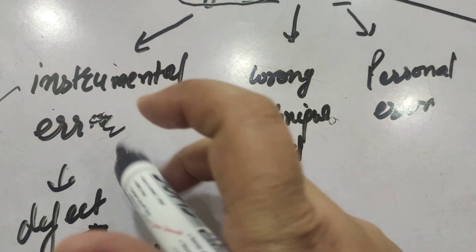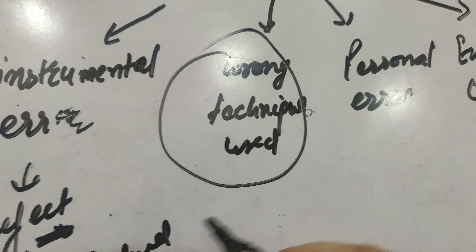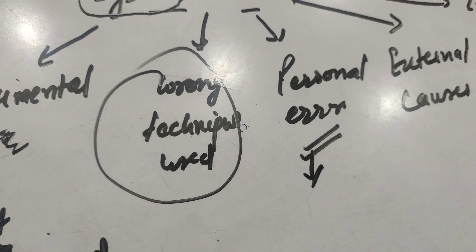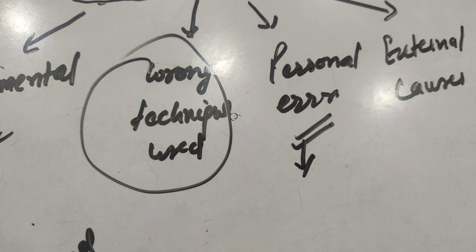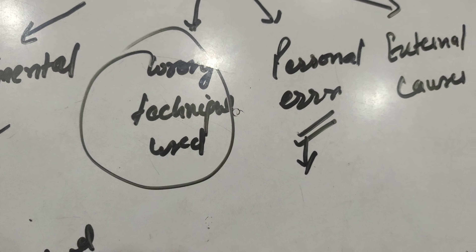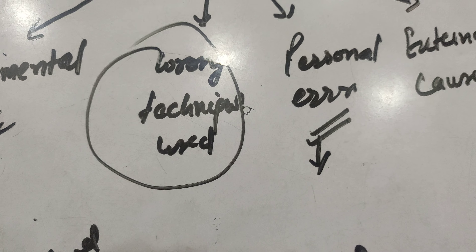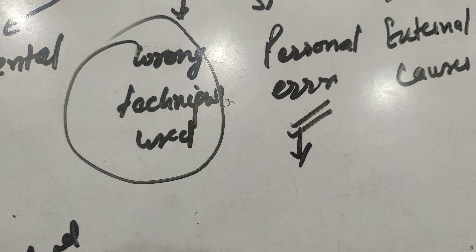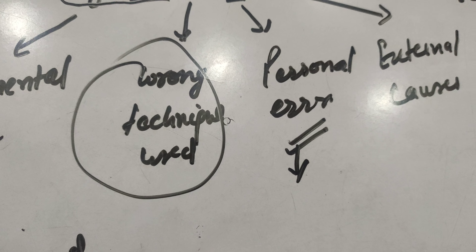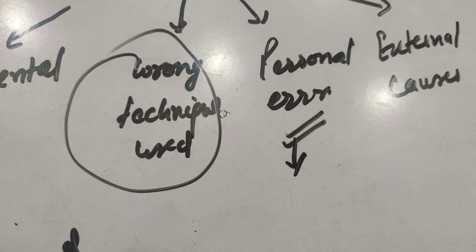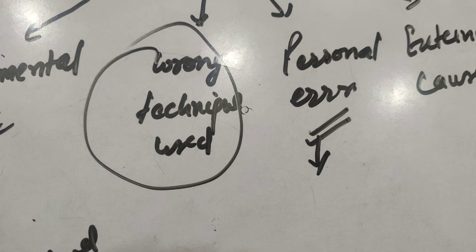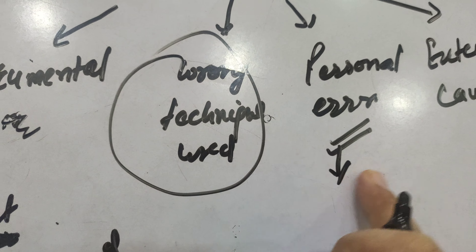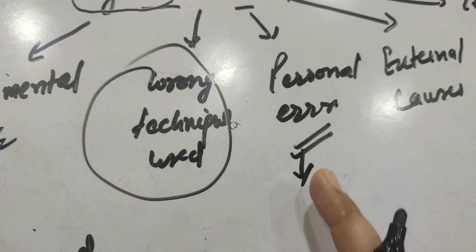Next is personal error. Personal error basically occurs when you know how to do a practical, but you don't know the precautions to be taken or the possible sources of error. In such cases, you mostly ignore these points and errors occur. Since these errors are due to your personal observations, they are called personal errors.